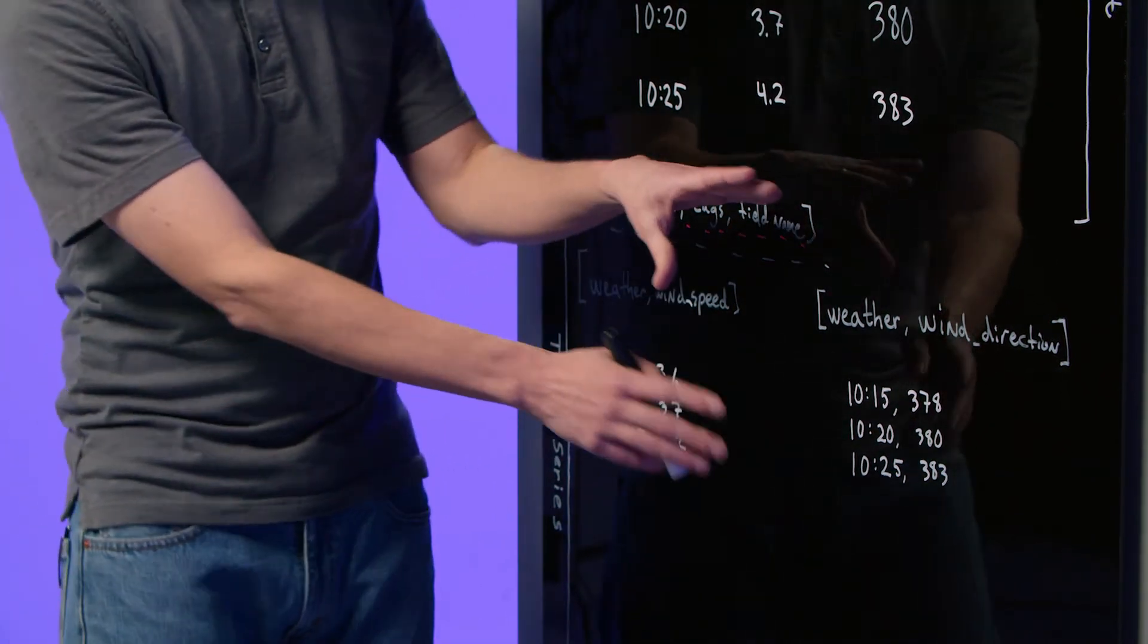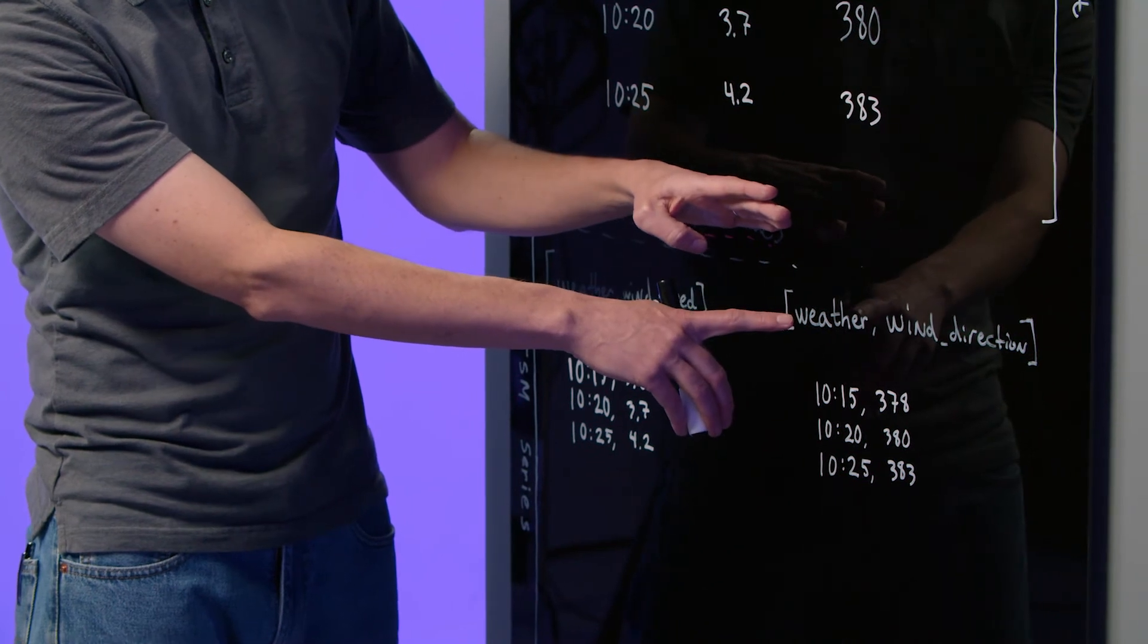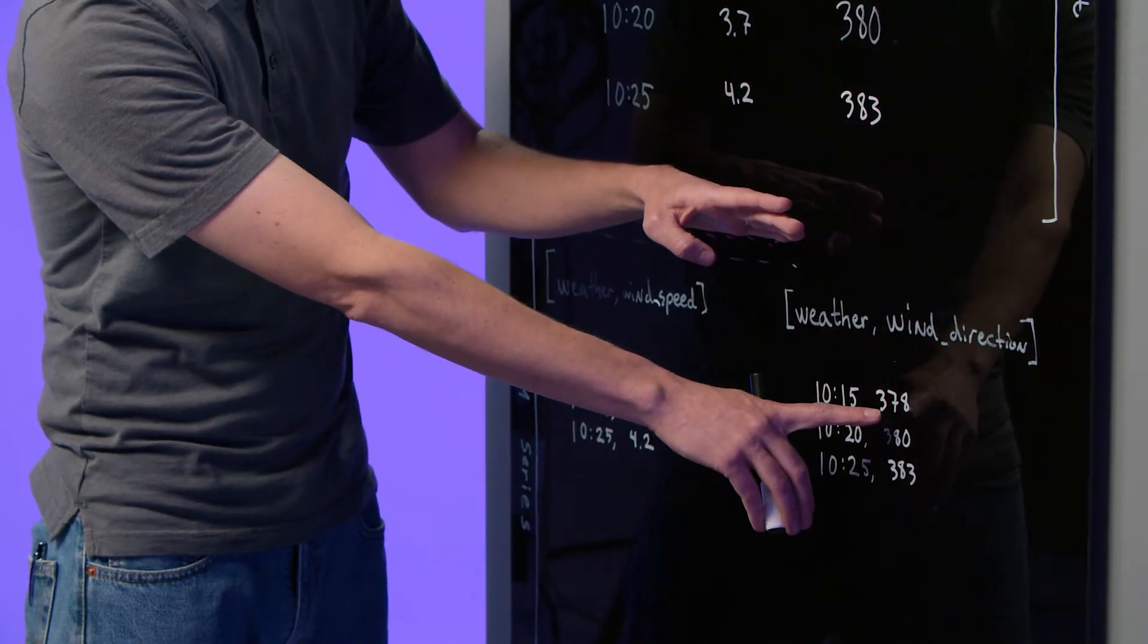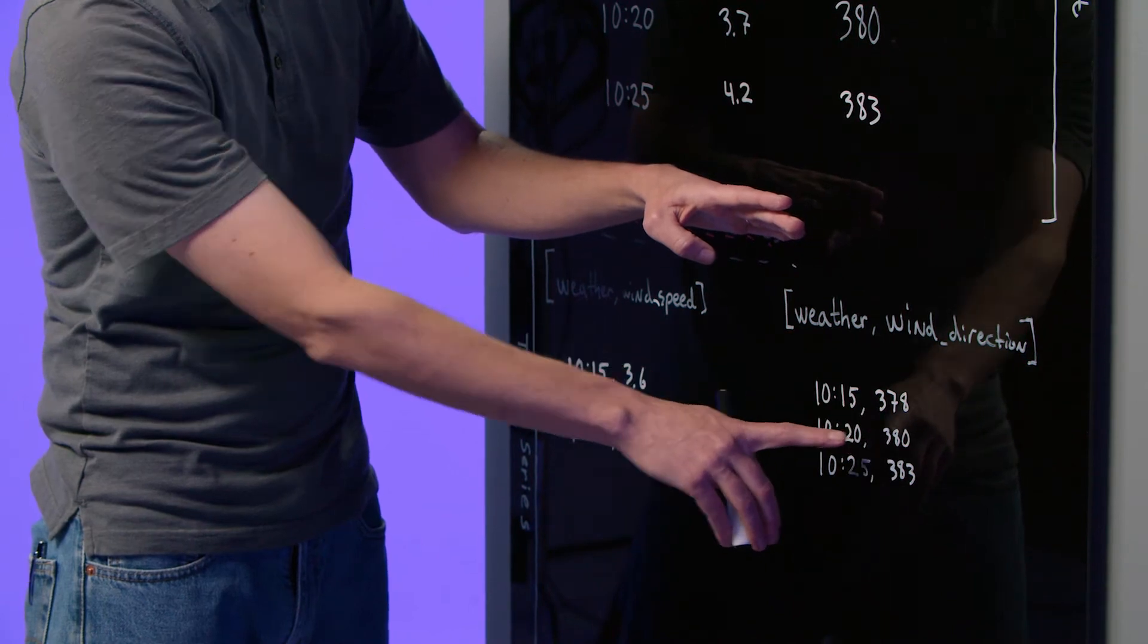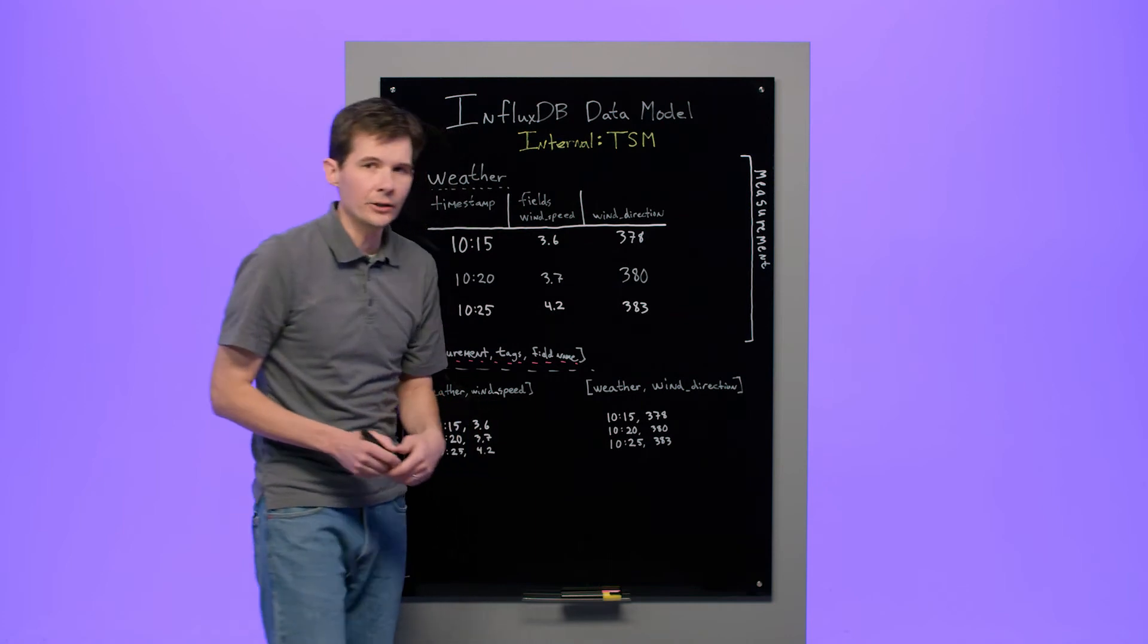Similarly, this series reads like this. According to measurement weather, the wind direction at 10:15 was 378 degrees. It was 380 degrees at 10:20, and at 10:25, the wind direction was 383 degrees.